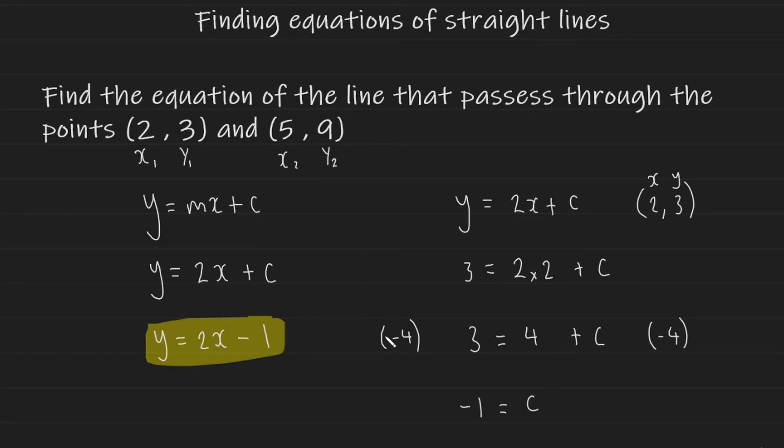So just to quickly reiterate what we did: we first began by writing y = mx + c, we then use the coordinates to find m which was 2. We then used one of the coordinates to find c by inputting each value of the coordinate into the equation that we have found up until that point. Once we found c, we rewrite the whole equation with m and c replaced, and that's how you do it.